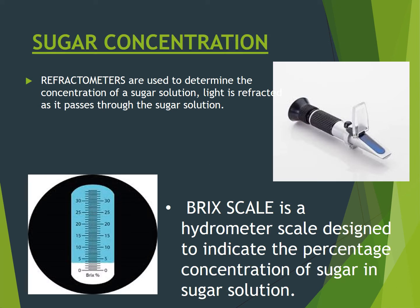For sugar concentration, refractometers are used. They help to find out the concentration of sugar in a sugar solution. The Brix scale is a hydrometer scale that is designed to indicate the percentage of sugar concentration in a sugar solution. You can see the picture here, and we are going to perform the function with this refractometer in the lab as well.